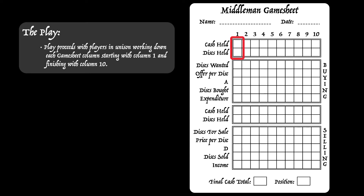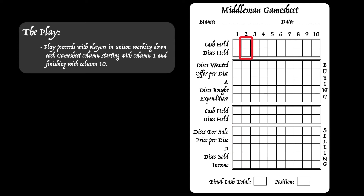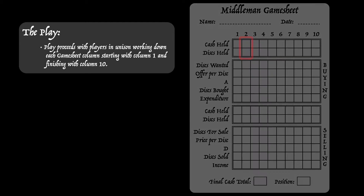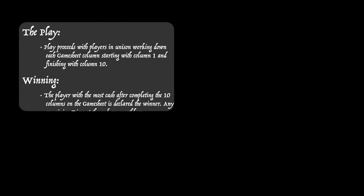First there's the summary: cache held, disks held. Then there's the buying details — that's the buying round. And then there's another summary of what cache and disks you now hold. Finally, in that cycle, there's the selling details that get filled in. Then another summary at the top of column two: what do you now hold in cache and what disks do you now hold? Remember, after completing the ten columns, it's the player with the most cache that wins.